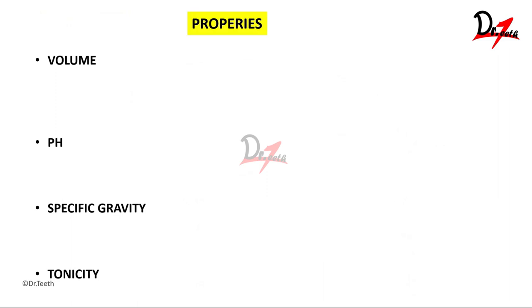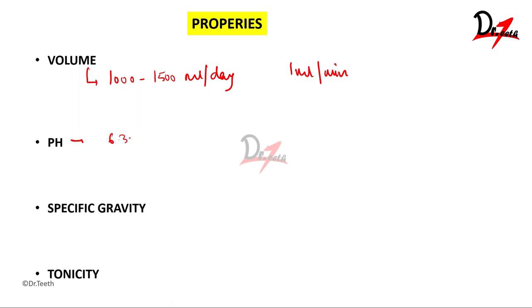The important properties of saliva: the average volume secreted is about 1000 to 1500 ml per day, which is about 1 ml per minute. The pH is slightly acidic, ranging between 6.35 to 6.85. The specific gravity is 1.002 to 1.012 — an important MCQ point. The tonicity of saliva is hypotonic compared to plasma.